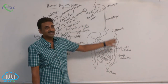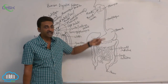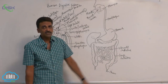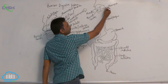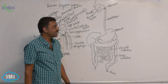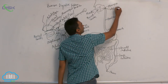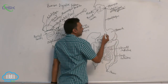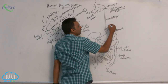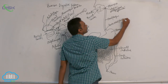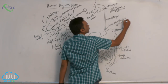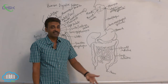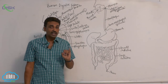Generally, digestion does not occur inside the esophagus — it is simply a tube-like structure about 25 centimeters long. Food passes through it by peristalsis. The esophagus is also called the food pipe or gullet. The upper region is guarded by the upper esophageal sphincter, and the lower region by the lower esophageal sphincter.